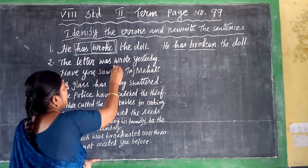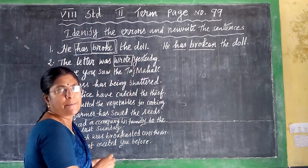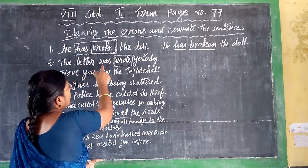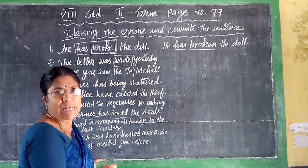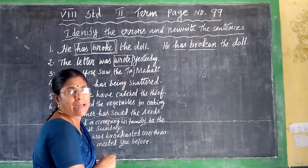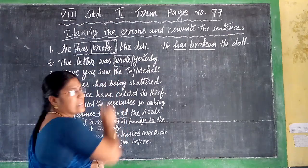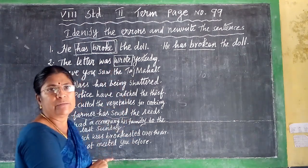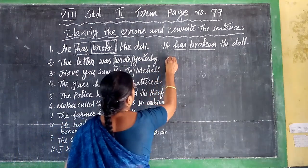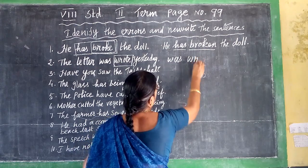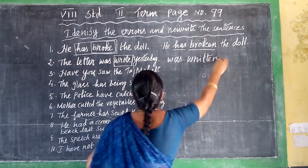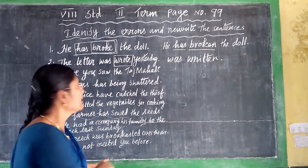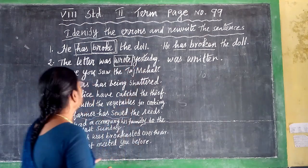Next sentence: 'The letter was wrote yesterday.' Here, the verb 'wrote' is a past tense form. The sentence is in passive voice, and the verb 'was' is followed by the 3rd form of the verb. So the correct answer is: 'The letter was written yesterday.'